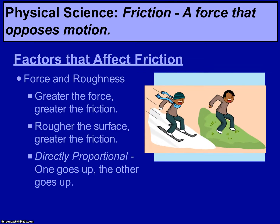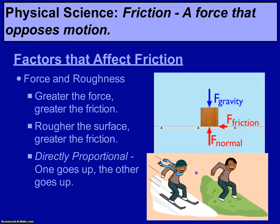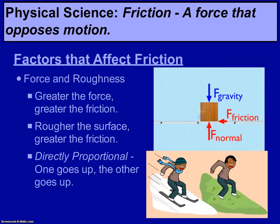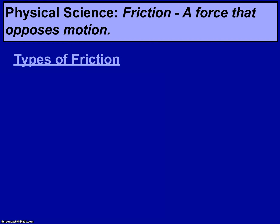As this little diagram depicts, we have a picture of a guy skiing down an icy slope and the same picture of the guy trying to ski down a grassy slope. Anybody that's ever tried that would get what's called a face plant, because there will be greater friction on the grass than on the icy slope. Both of these values — greater force means greater friction, rougher surface means greater friction — are directly proportional to each other, meaning one goes up and the other will also go up.